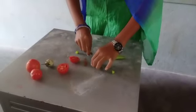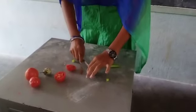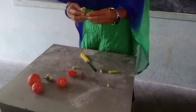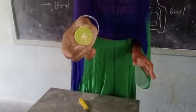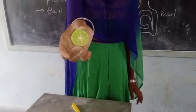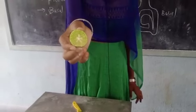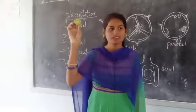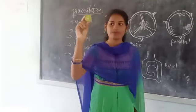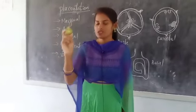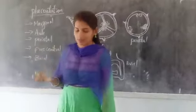Can you guess what lemon is an example for? Axial placentation — very good! You can see here very clearly. There are many carpels, many chambers — multi-carpellary, multi-chambered — and the seeds are arranged in the center. So lemon is also an example for axial placentation.